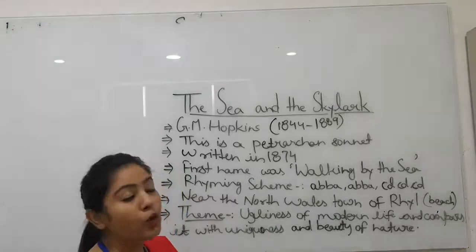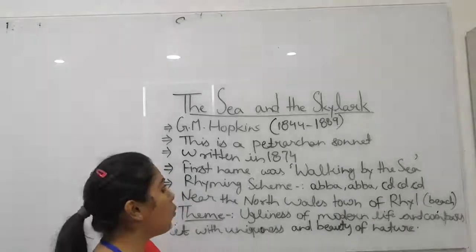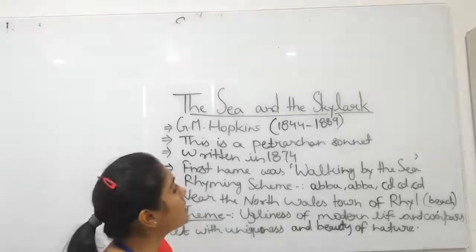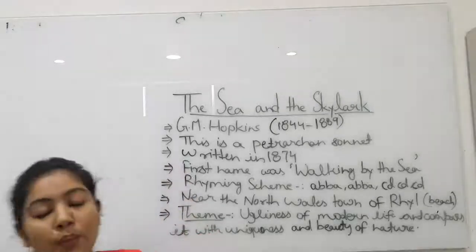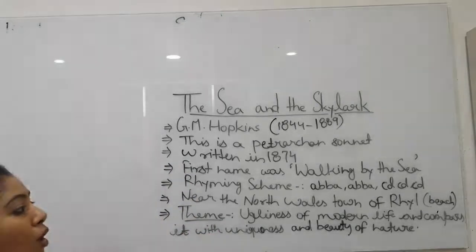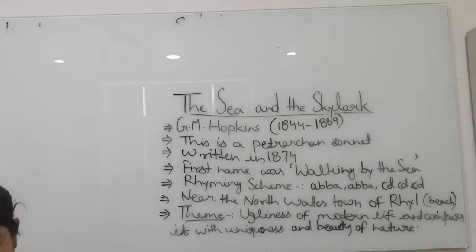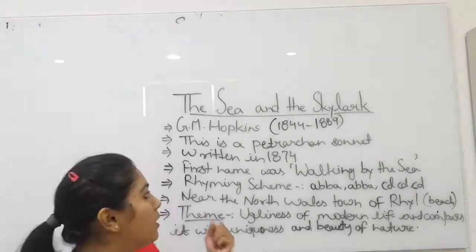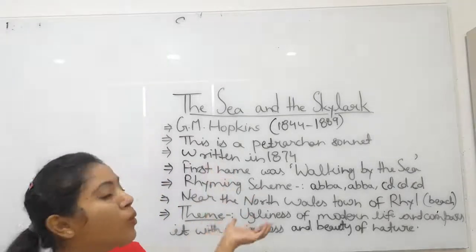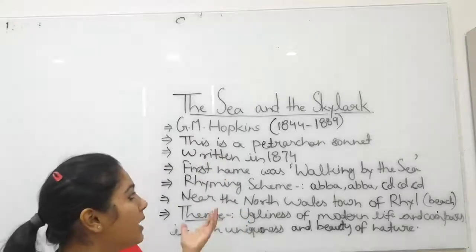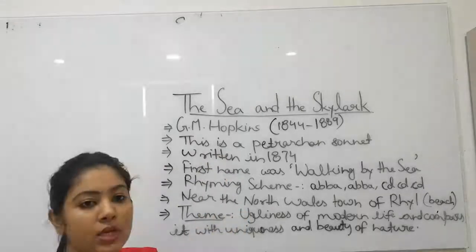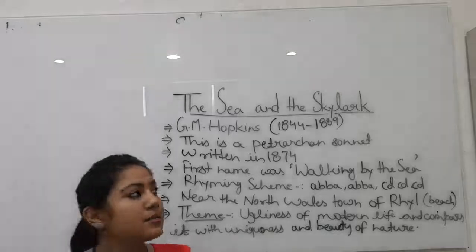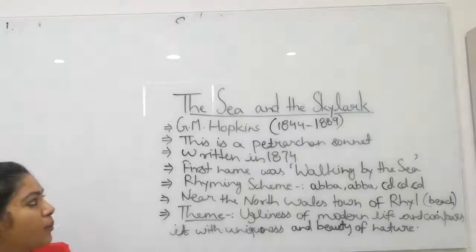This poem deals with human life and the materialistic world. The poet, who is obviously a human being, urges us to look at nature. He is a Victorian age poet — G.M. Hopkins. So let's read about the poem.